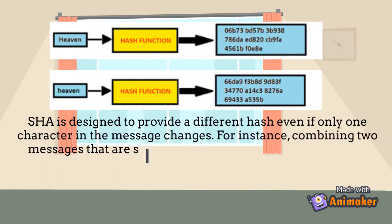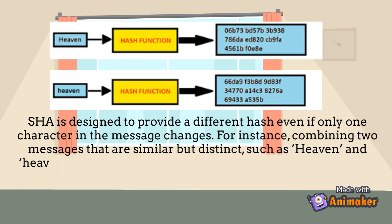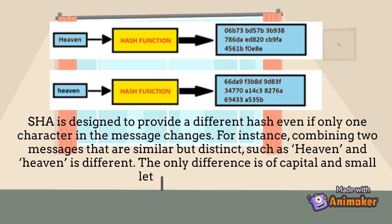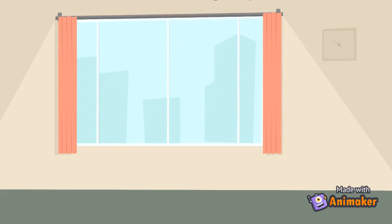For instance, combining two messages that are similar but distinct — such as 'heaven' and 'Heaven' — produces different hashes. The only difference is the use of a capital versus small letter in the spelling. Next is RSA.